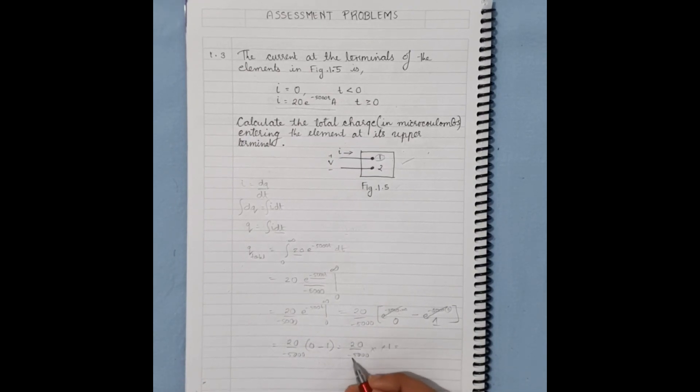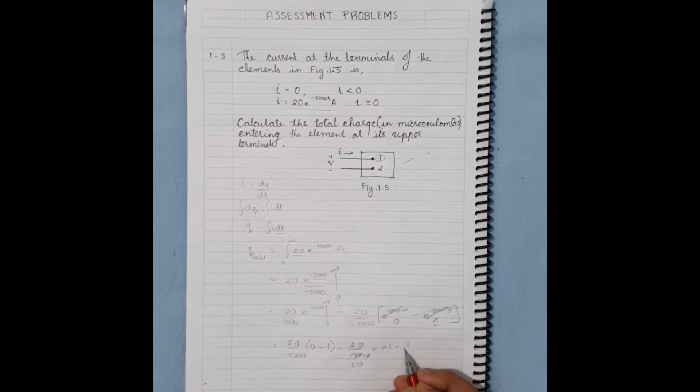If we perform the calculation, we get 1/250 coulombs.